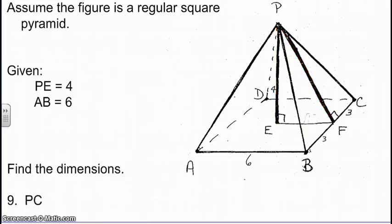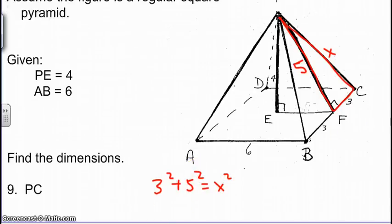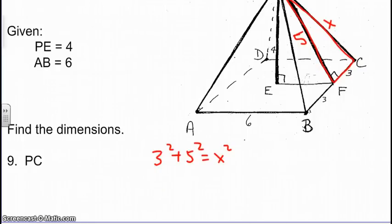Again, using the same figure, moving on to the next portions. Here we are looking for PC. We just found that the slant height was 5. So if we refer to this right triangle PFC, we've got 3, 5. Now it's not a triple because the 5 is not the hypotenuse. So we'd have to use the Pythagorean theorem. 3 squared plus 5 squared equals x squared. Therefore, we'd get 9 plus 25, which would give us 34. And the square root of that would then be PC would be square root of 34.